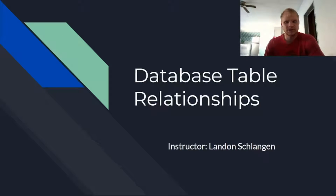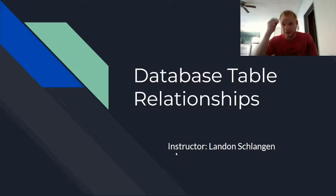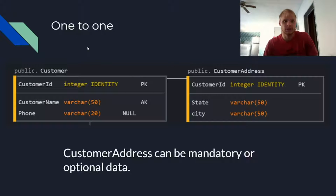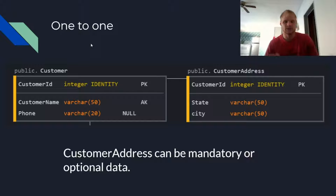Hello, I'm Landon Schengen and today I'm making a quick video about database table relationships. There are going to be three different types of relationships. The first one is one-to-one, the next one is one-to-many, and the third one is many-to-many. Let's start off with the one-to-one database relationship.